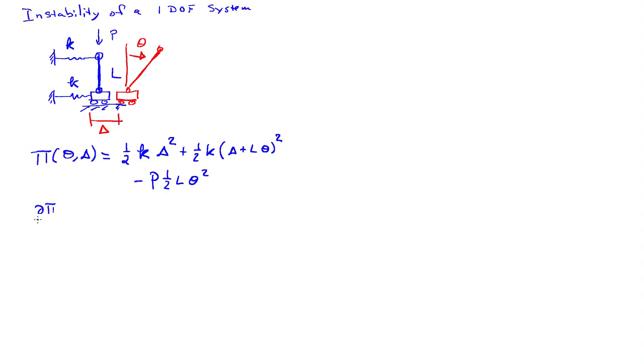So from here, we can look at the equilibrium equations, and then we'll look for values of P that will allow for instability. So the derivative with respect to delta gives me K delta plus K times delta plus L theta. So that's my first equilibrium equation. And the derivative with respect to theta will give me my second equilibrium equation. So that's going to be K times L times delta plus L theta, minus P L theta equals zero.